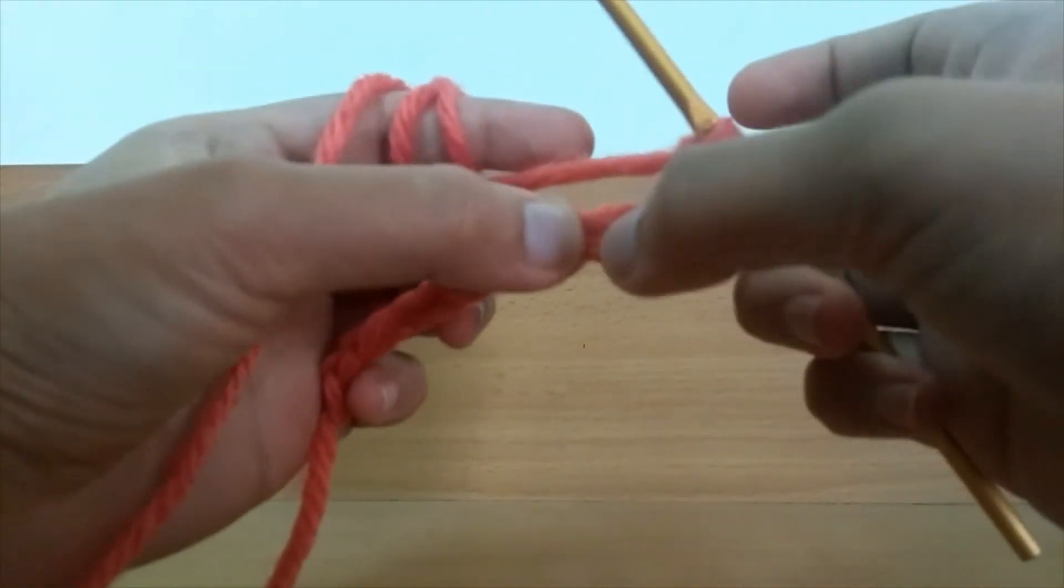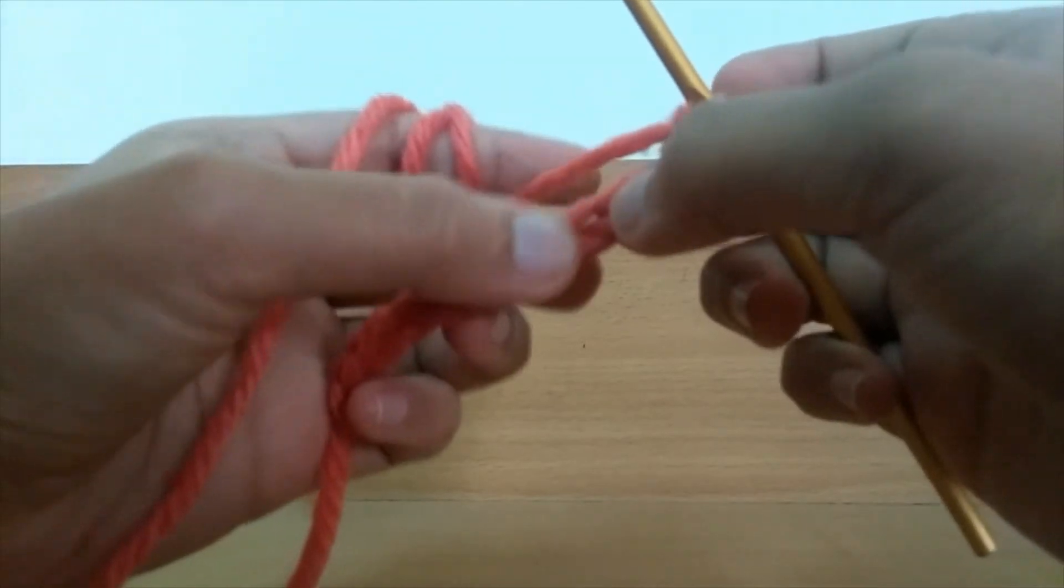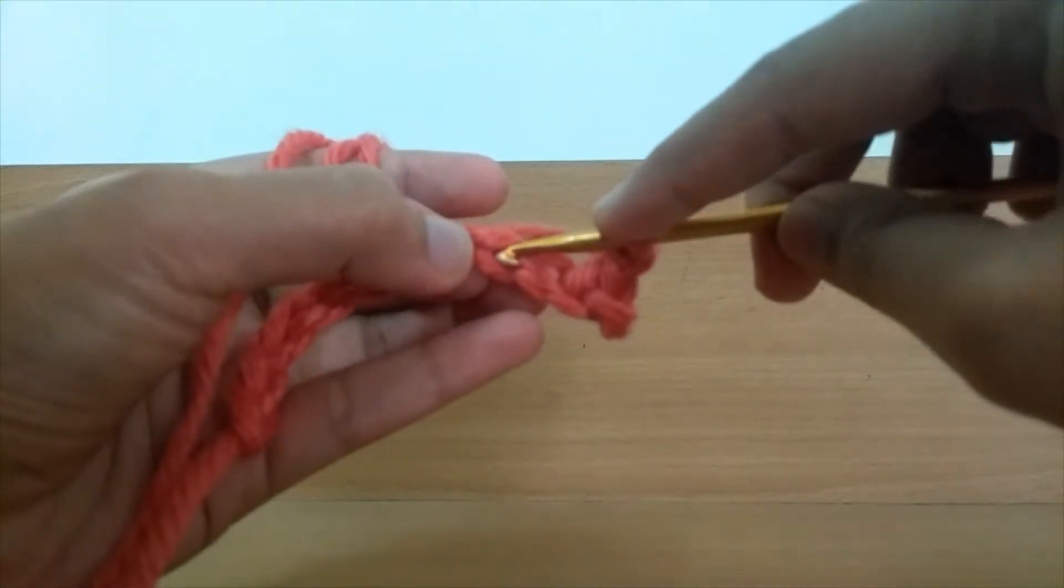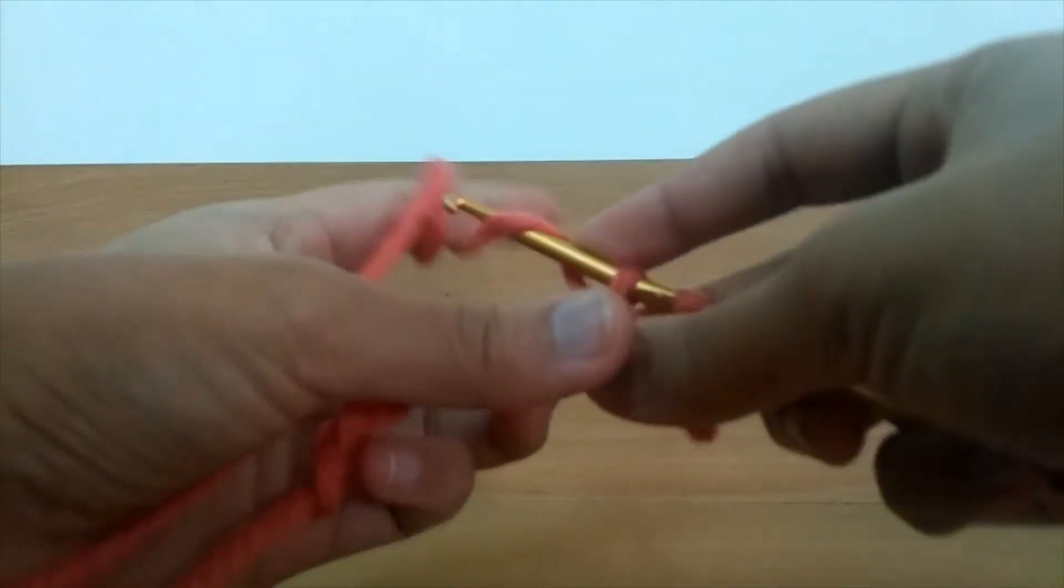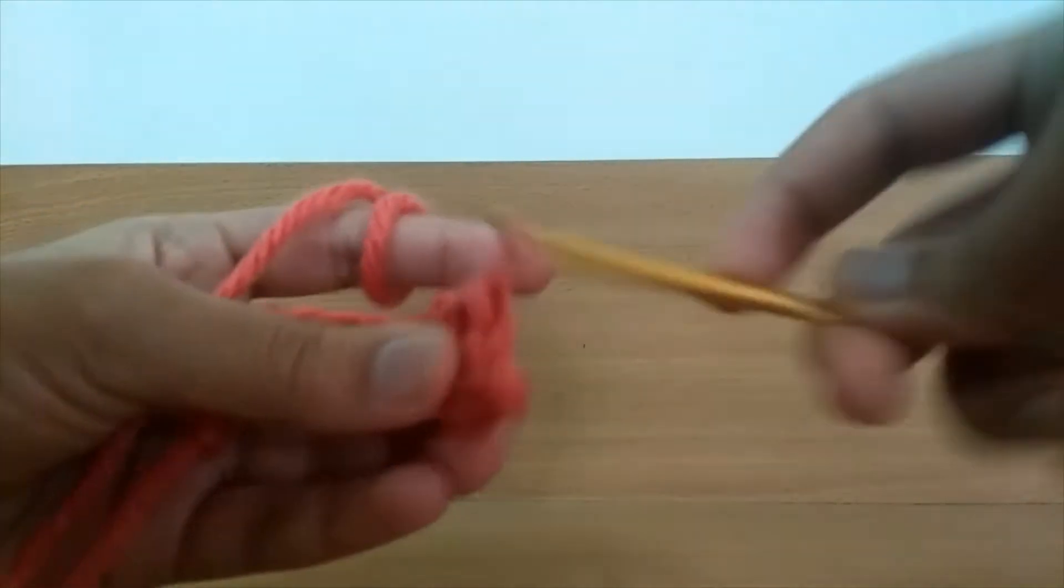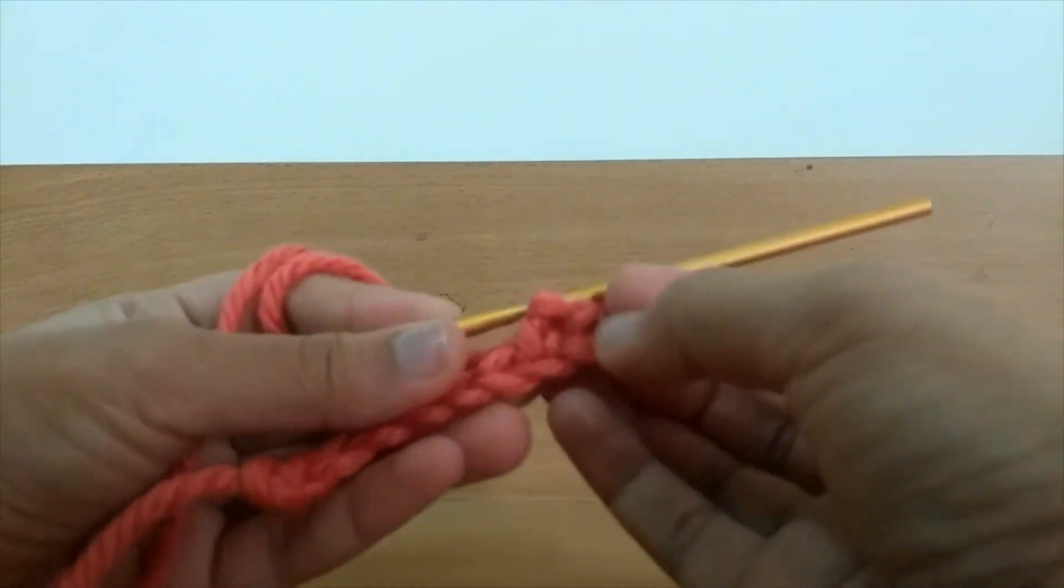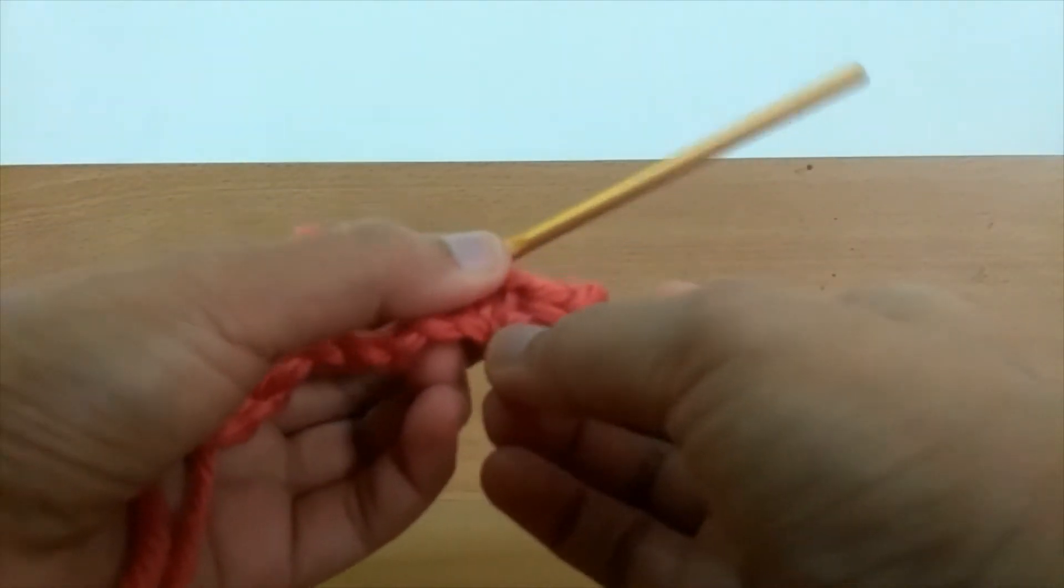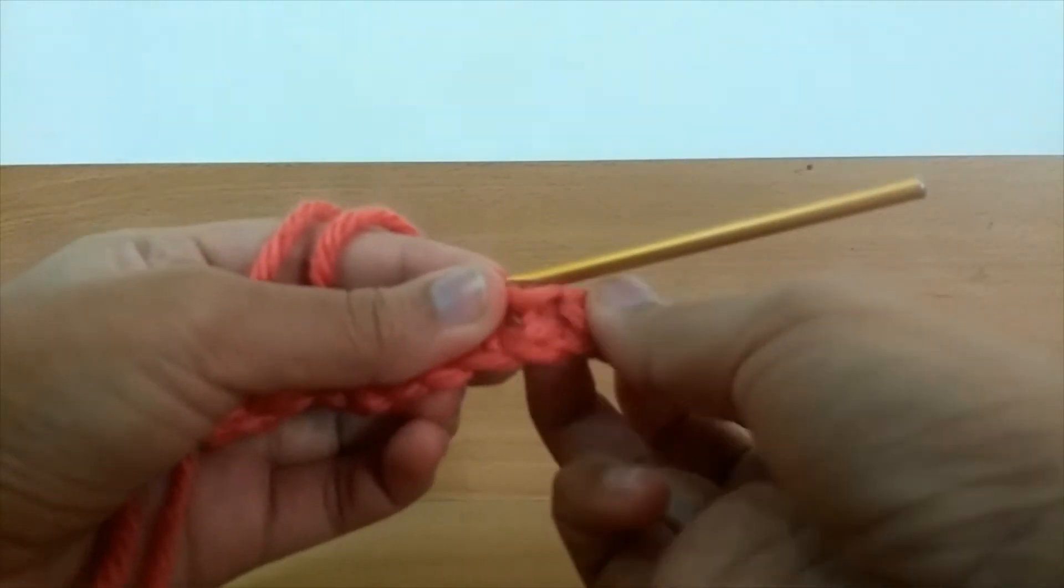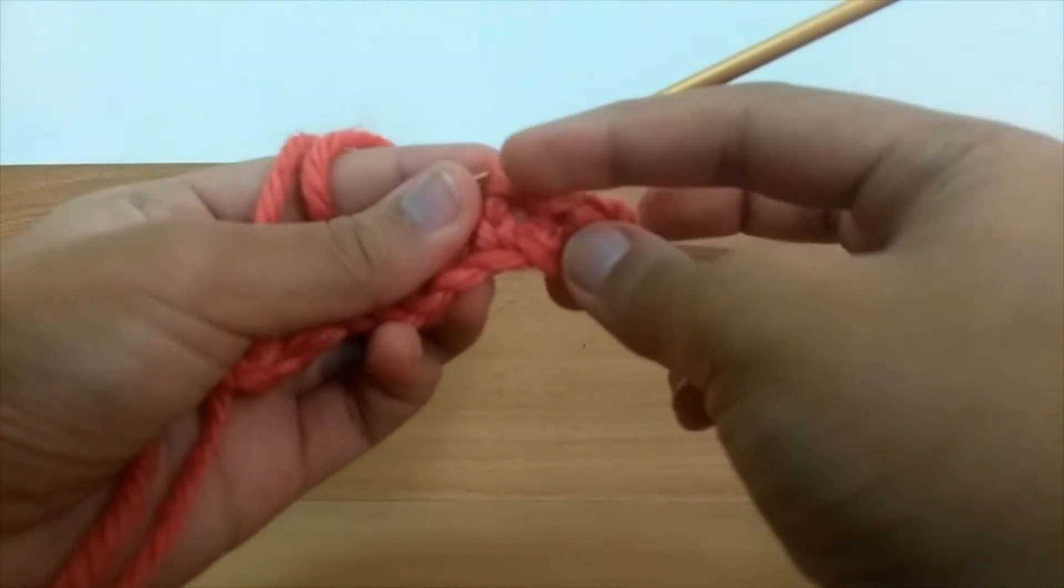You're skipping that. Go into the next chain and do a single crochet. So now you've got a base chain, a single crochet, a skipped stitch with the chain above it here, and a single crochet.